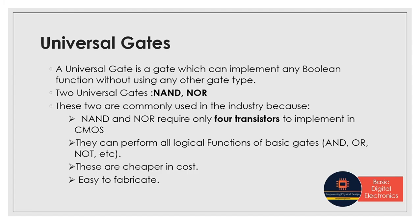Let's see first, what is a universal gate? A universal gate is a gate which can help to implement any boolean function without using any other logic gate. And we know in industry, we commonly use two gates as universal gates — those are NAND and NOR gate.